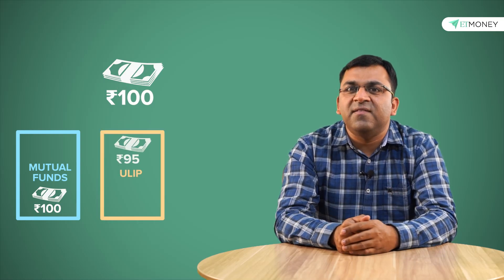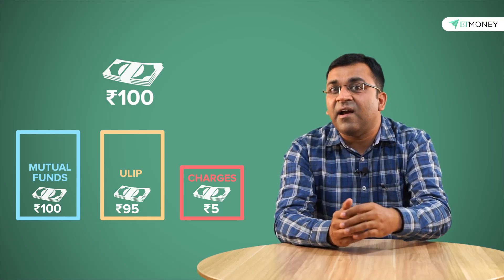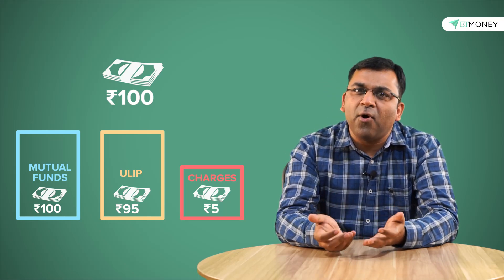Firstly, because of the charges, the amount of money that goes into investments is lower in ULIPs as compared to a mutual fund. For example, if you invest 100 rupees in both instruments, all 100 rupees is invested in the mutual fund. However, maybe only 95 rupees gets invested in a ULIP as that remaining 5 rupees goes towards mortality, premium allocation and other charges.